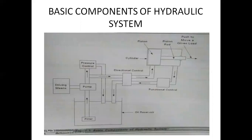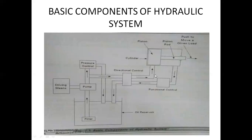The direction control valve provides the means to change the direction of fluid flow — for example, from one end of a cylinder to the other. It also provides a means to shut off the flow completely. The fluid direction should be changed by using the directional control valve so we can flow the fluid to our required position of the cylinder.